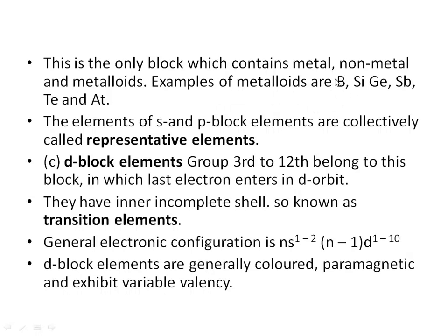The p block is the only block that contains metals, non-metals, and metalloids. Examples of metalloids include boron, silicon, germanium, antimony, tellurium, and astatine. The elements of s block and p block together are collectively known as representative elements. This is an important one-mark question: s and p block elements together are called representative elements.